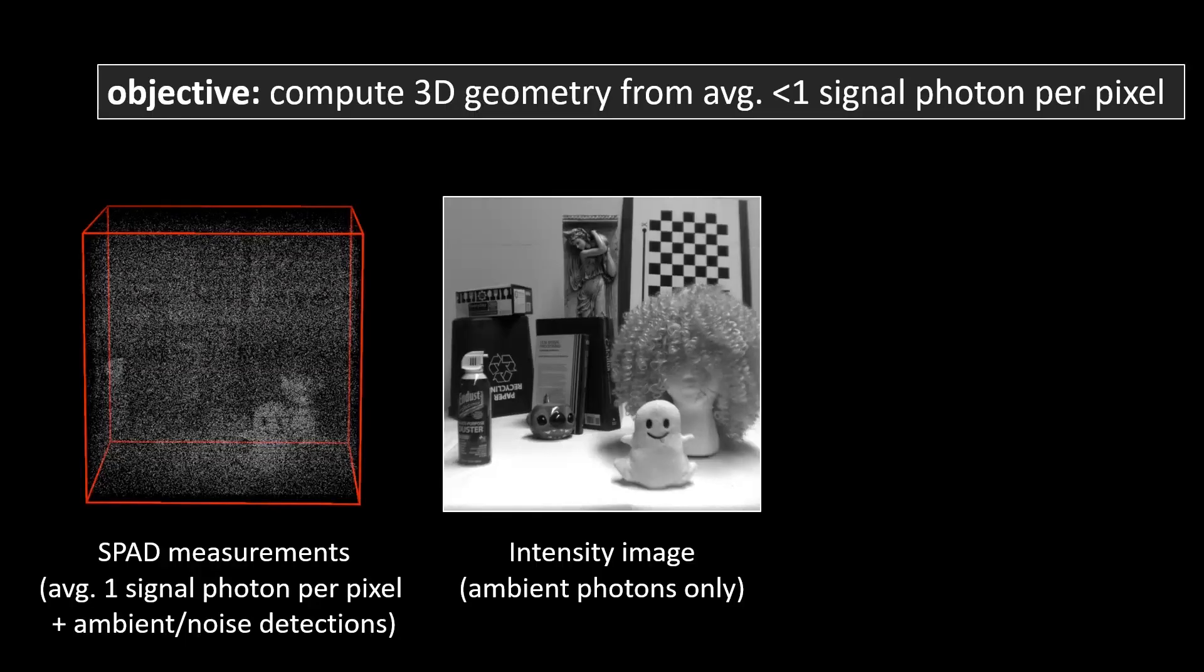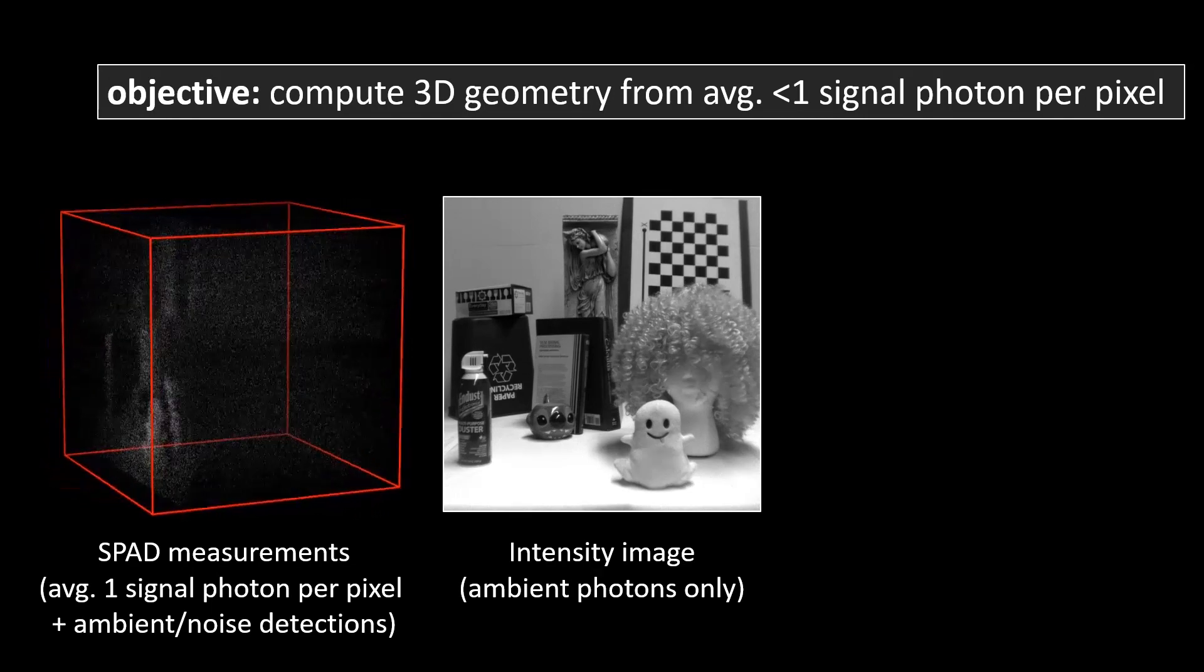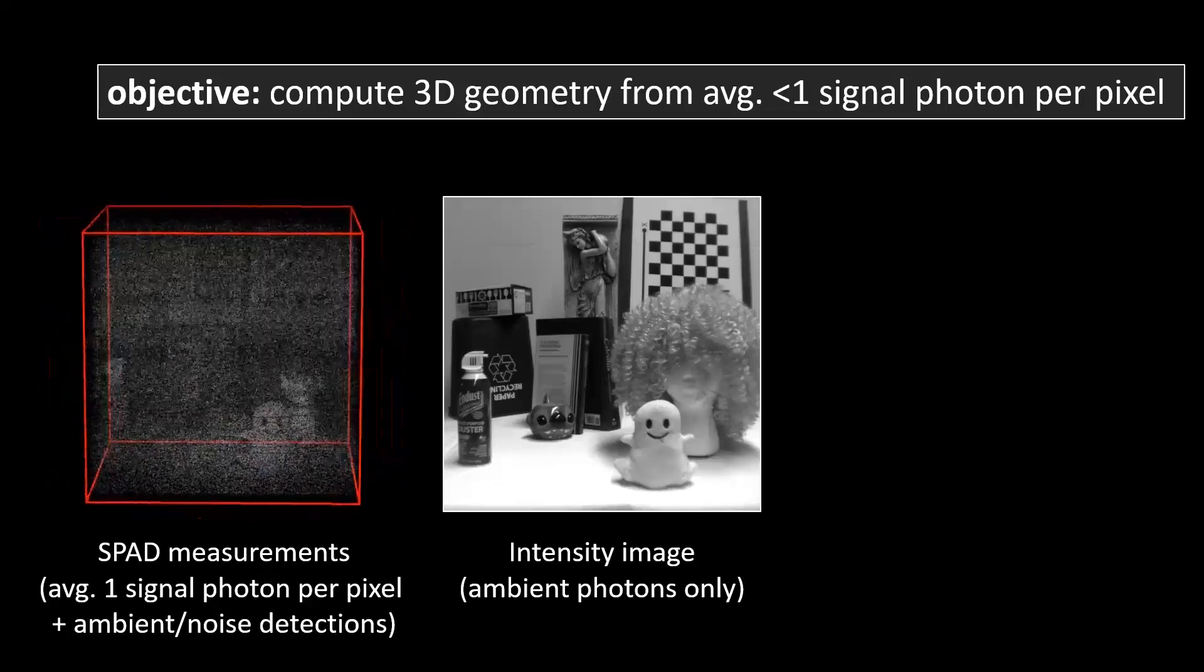In this paper, we seek to alleviate these limitations by estimating a 3D representation of a scene from measurements containing an average of only one or fewer photons per pixel from a pulsed illumination source.